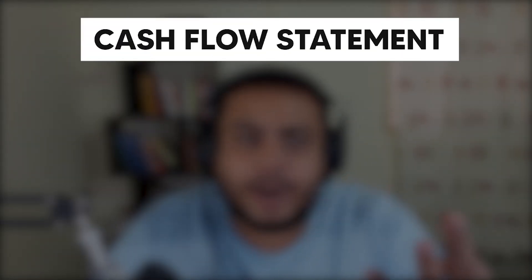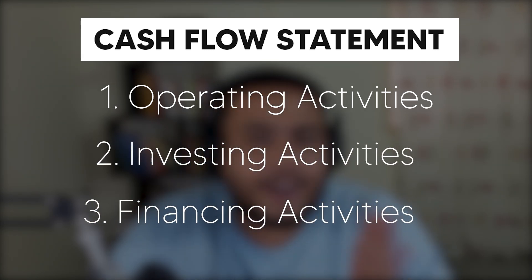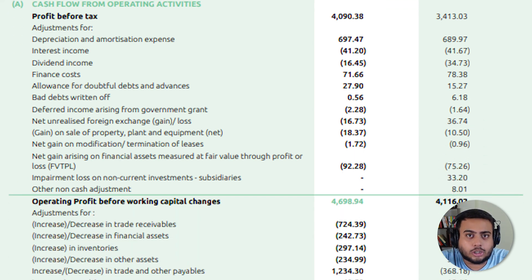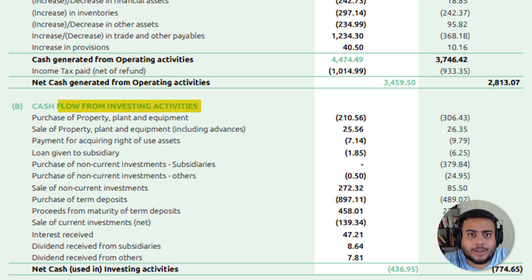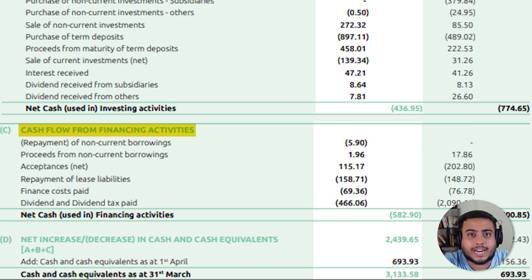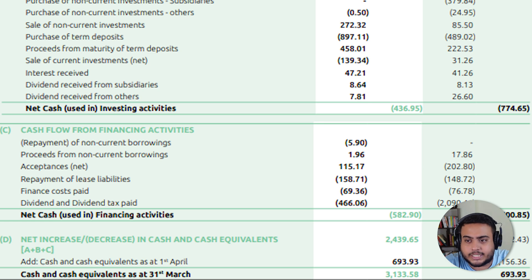The cash flow statement is divided into three parts: cash flow from operating activities, investing activities, and financing activities. Cash flow from operating activities adds back depreciation to net income and also adds any gain from the sale of fixed assets. It also includes changes in current assets and current liabilities — essentially, this section shows cash flow from core operating activities. Cash flow from investing shows the sale and purchase of assets like machinery, land, etc., as well as interest or dividends from investments. Cash flow from financing activities includes cash coming from debt or capital contributions from partners, and also outflows to repay loan amounts or lease liabilities. The net amount from all three sections plus the opening cash balance shows the net cash in the business.